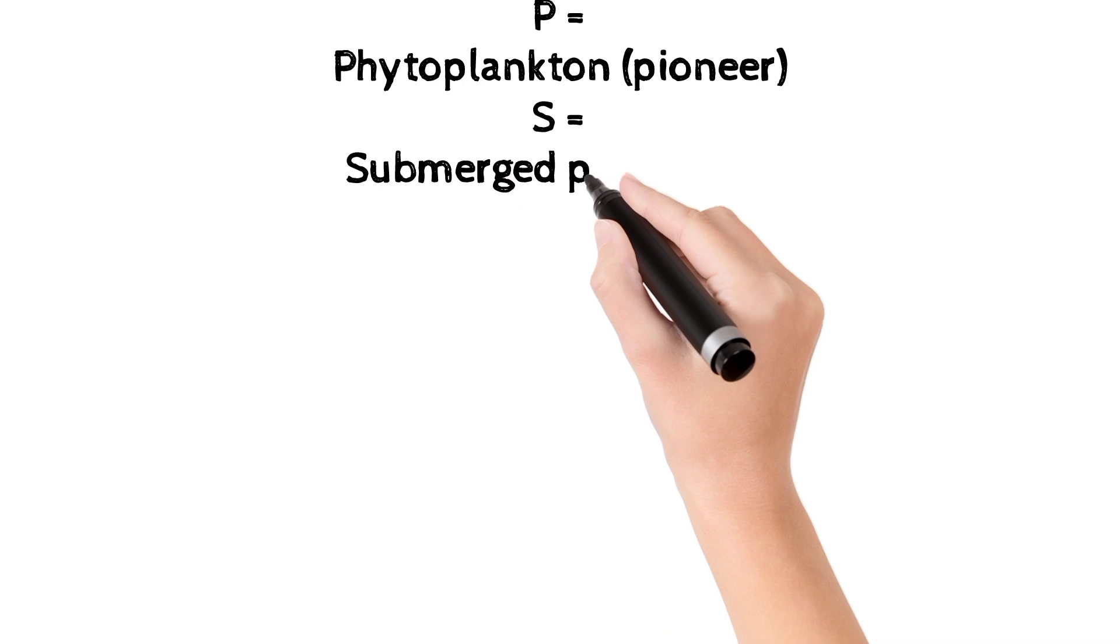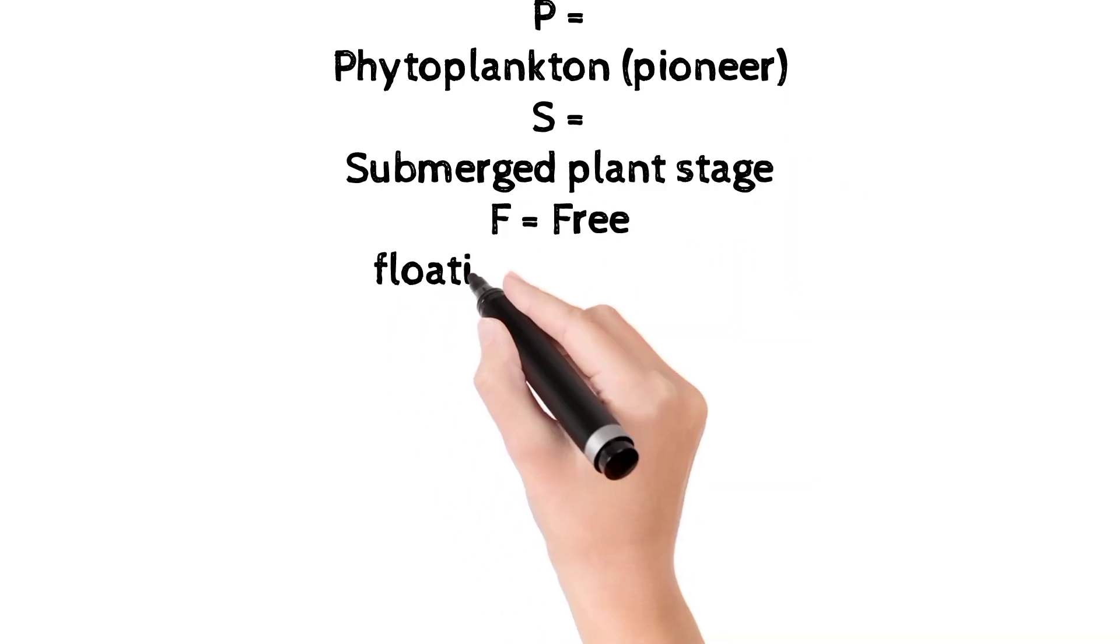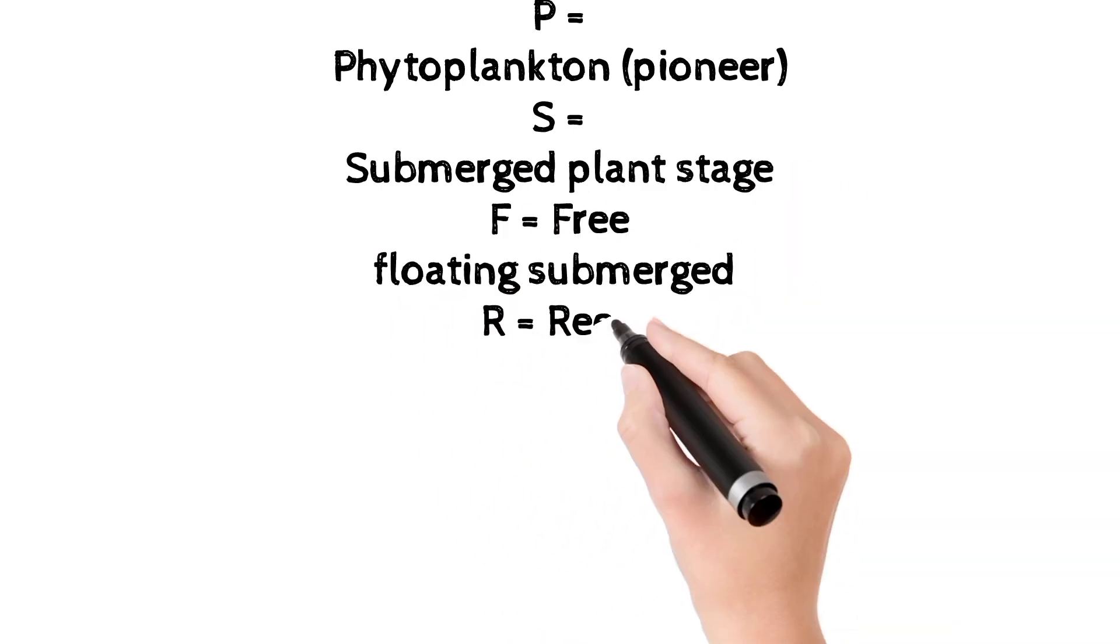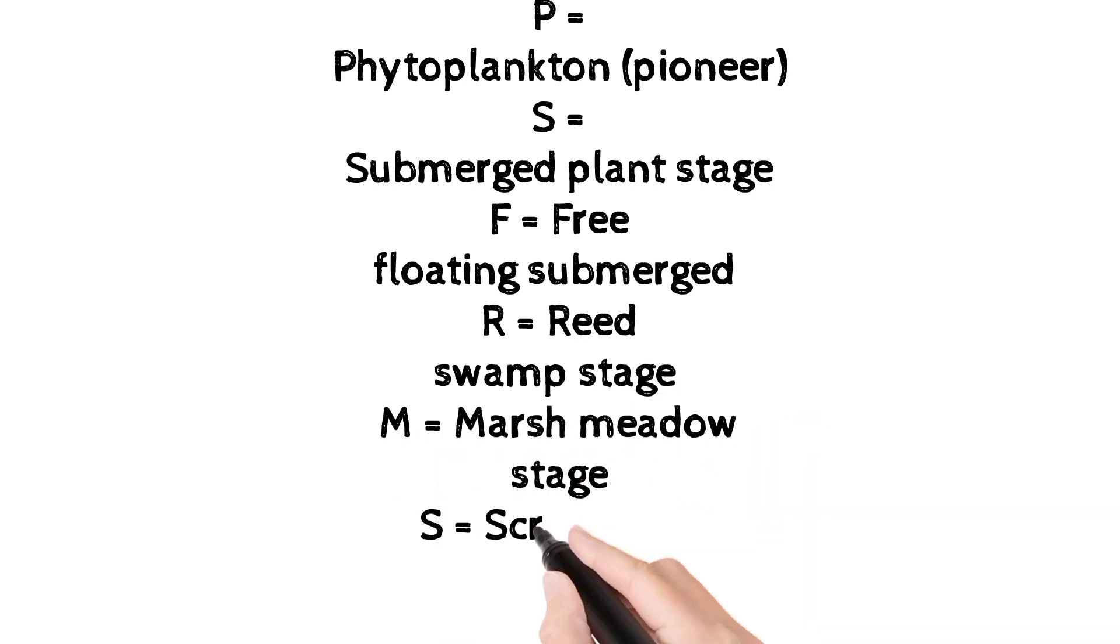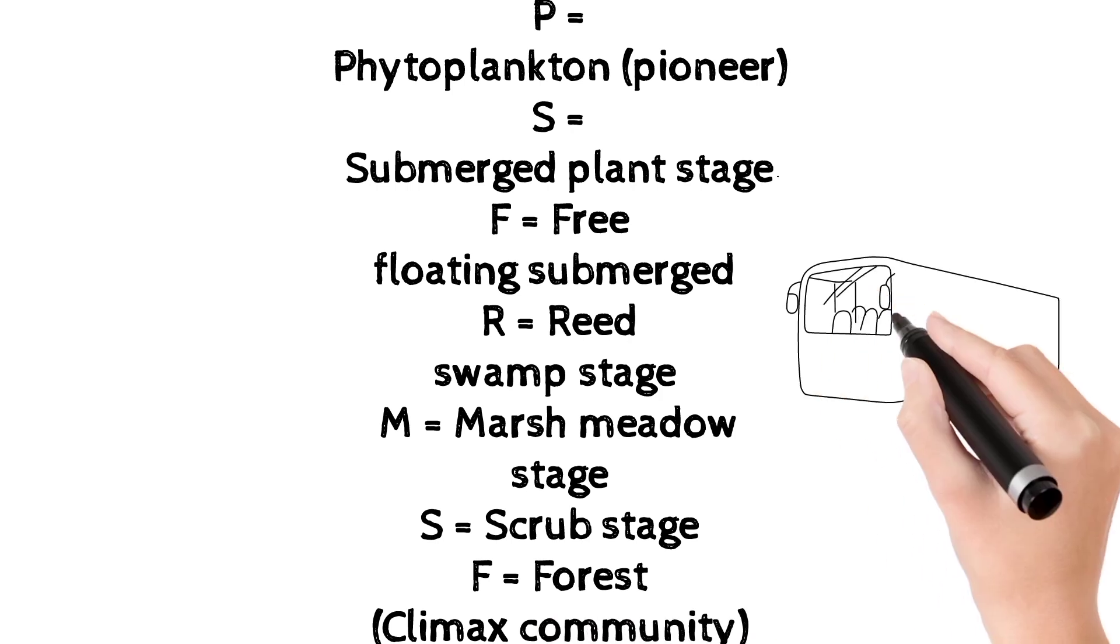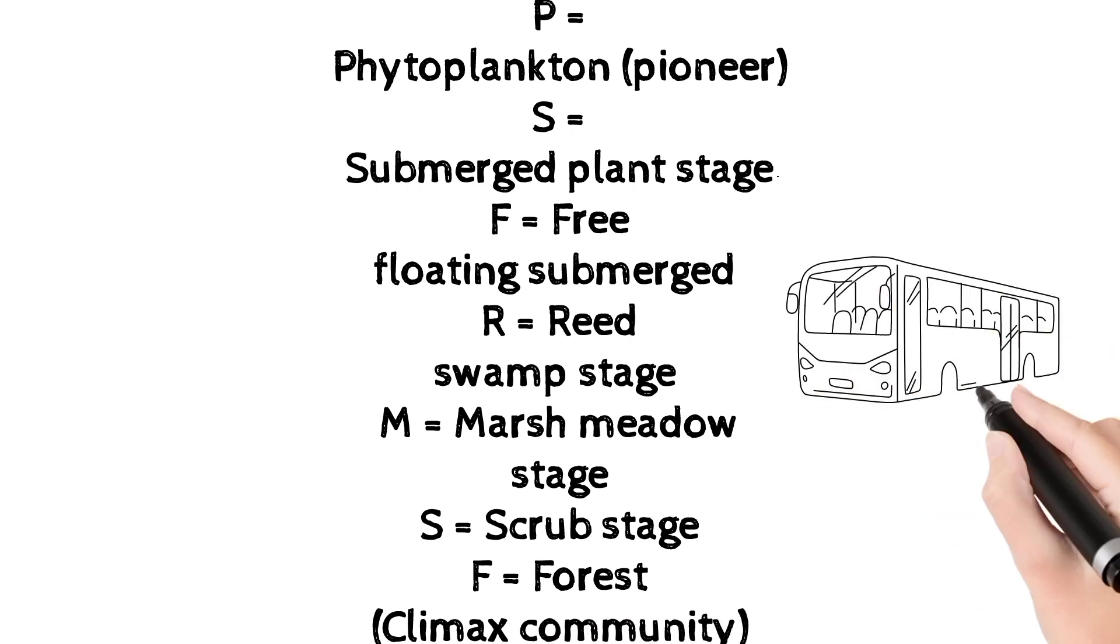In the trick, P denotes phytoplankton which is also a pioneer, S denotes submerged plant stage, F denotes free floating submerged, R denotes reed swamp stage, M denotes marsh meadow stage, S denotes scrub stage, and F denotes forest, that is the climax community.